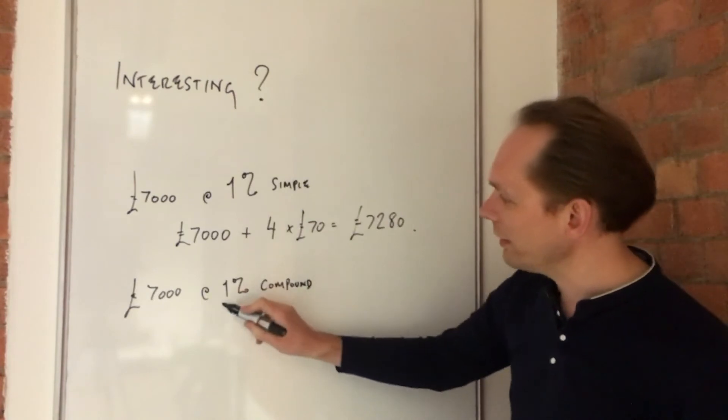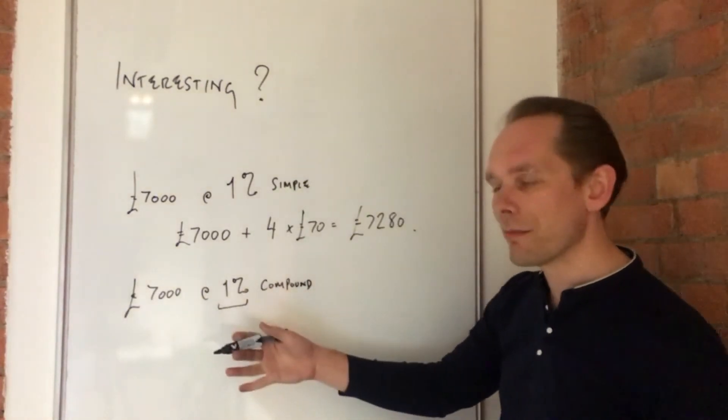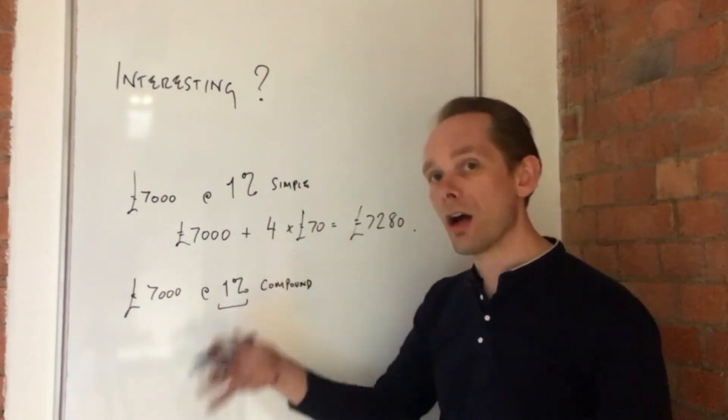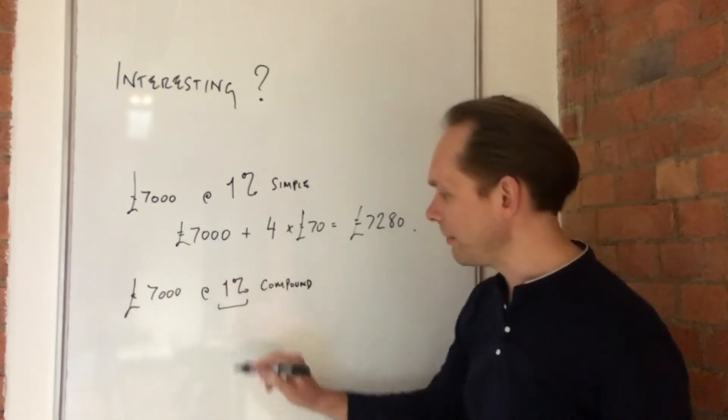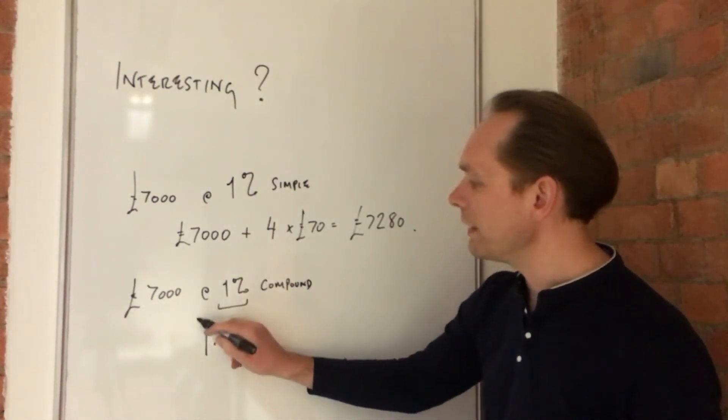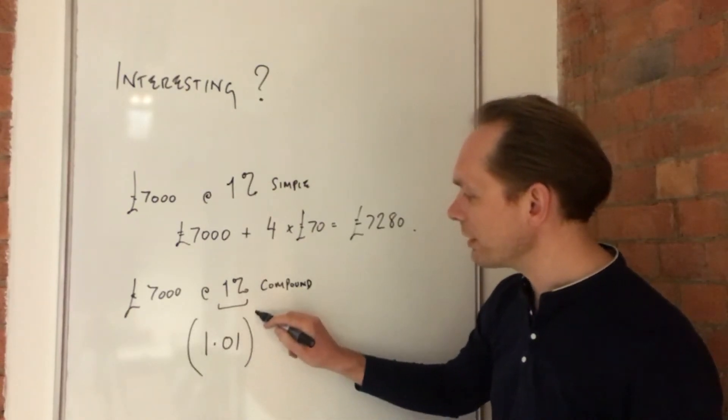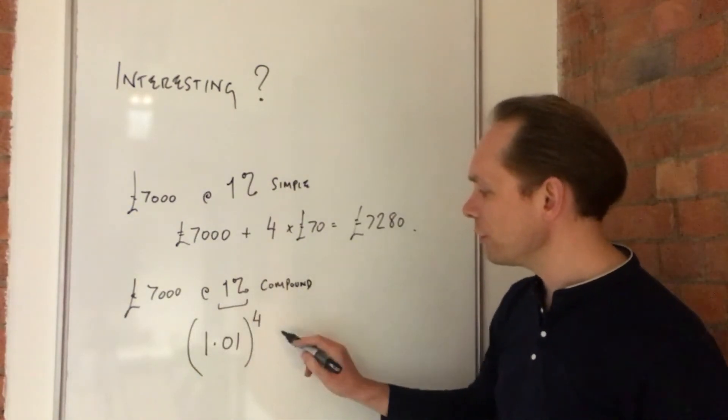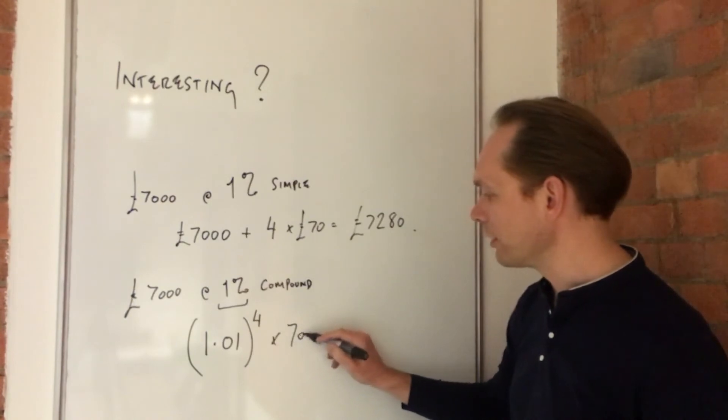But the calculation is to look at this and say, instead of working out 1% and adding it on, we're going to work out 101% because that's going to be the new amount. 101% can be written as 1.01. And if you want four years of that, you put it to the power of four. Now, if you do that and multiply it by the original amount,